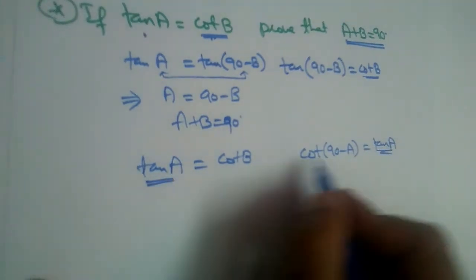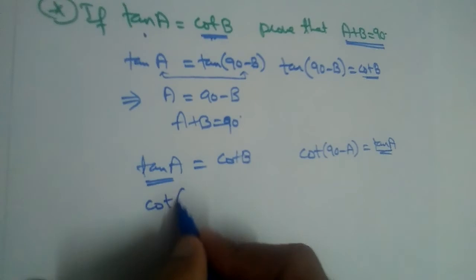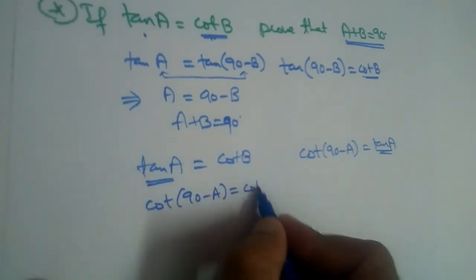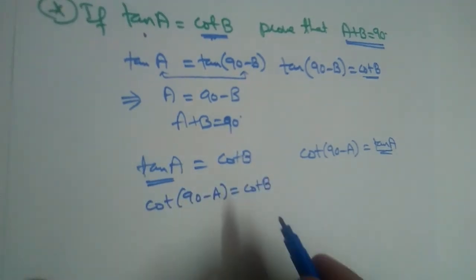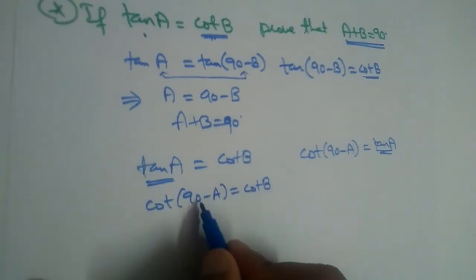Of course we can. So this is cot(90-A) is equal to cot B. Both are cot, cot. Don't cancel this - cancellation of cot and cot will be wrong.